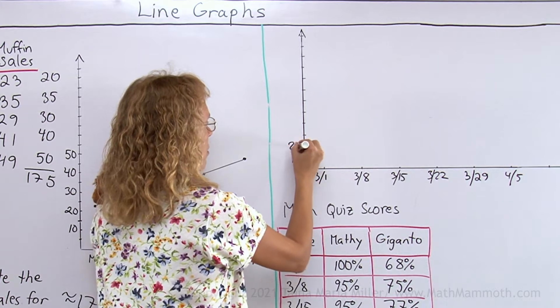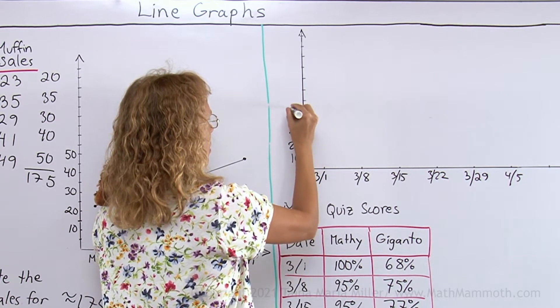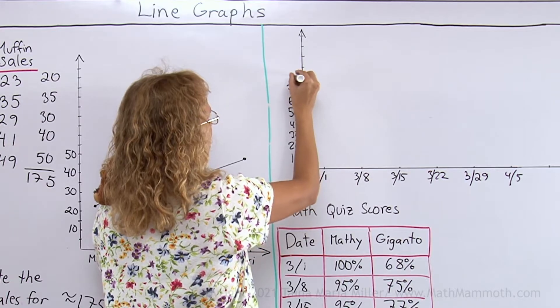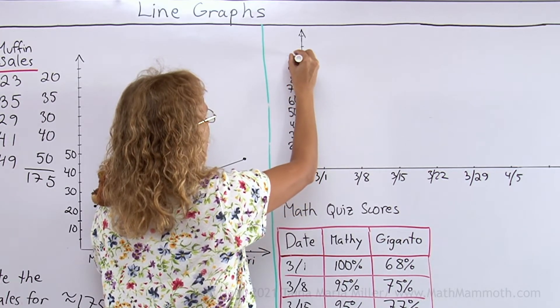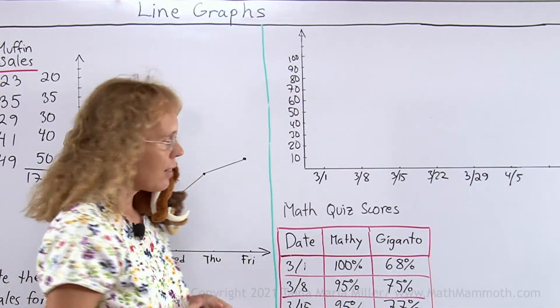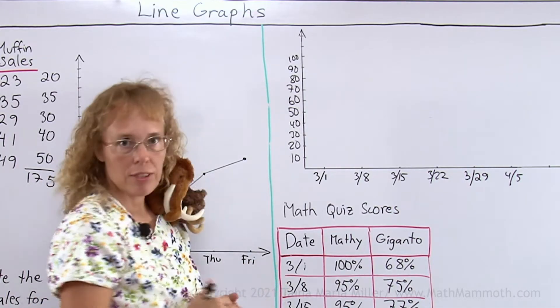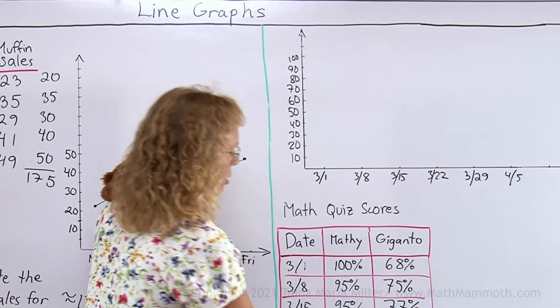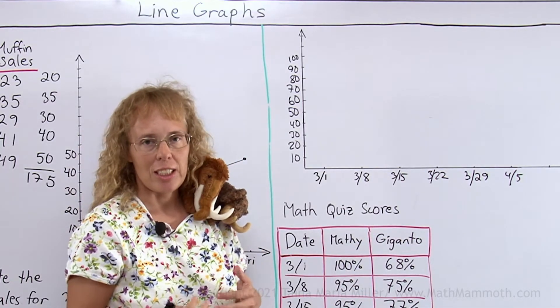There. So we would have 10, 20, 30, 40, 50, 60, 70, 80, 90, and 100% there. And now we are ready to draw the line graph. And I will use two different colors now. One for Mathie scores, the other one for Giganto's, so it will be differentiated better.